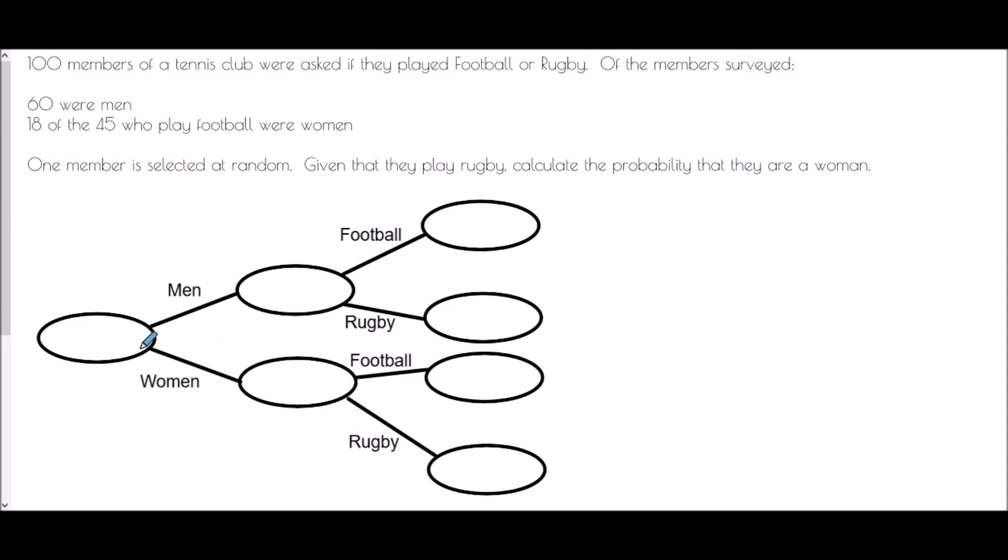So each of them have been split into gender first and then into the different sports that they play. And so it will create a frequency tree like this. First of all, splitting the people up into men and women and then within each of those categories, splitting them into football or rugby. And so all I want to do is make my way through the information in order to fill in the gaps. So first of all, there are 100 members. So the first thing that I can say is this bubble must be 100. And 60 were men. So this bubble must be 60.